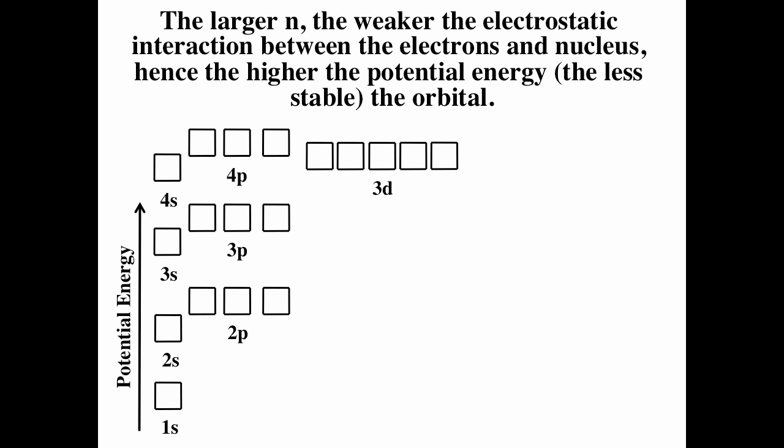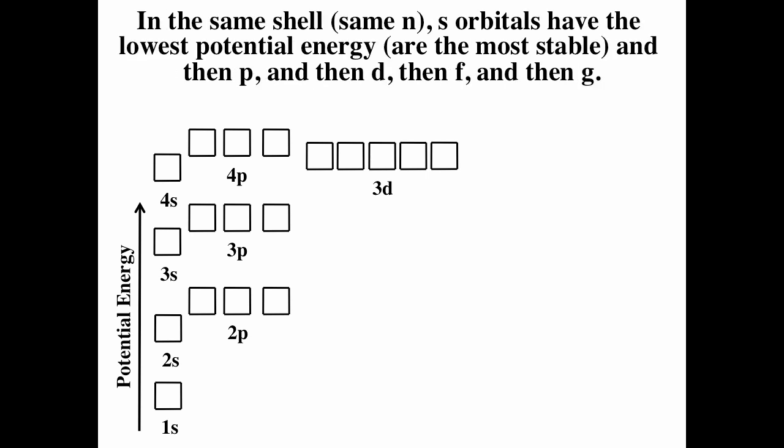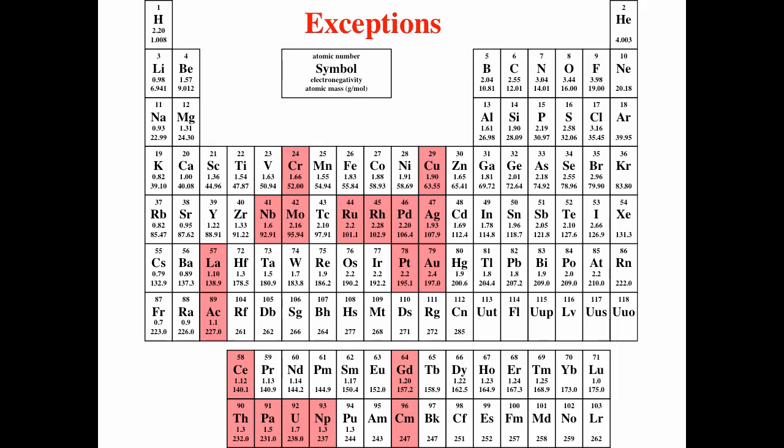The general energy diagram for the orbitals goes: 1s², 2s², 2p⁶, 3s², 3p⁶, 4s², 3d¹⁰, 4p⁶. This comes from two things: smaller n means closer and stronger attraction, and within a shell s is lower than p which is lower than d. Combining these, we notice that 3d is often lower in energy than 4p. There are exceptions to this general diagram — for each element the diagram changes, and adding or removing electrons also changes the relative energies of these states. The exceptions include certain elements highlighted in red in the diagram.